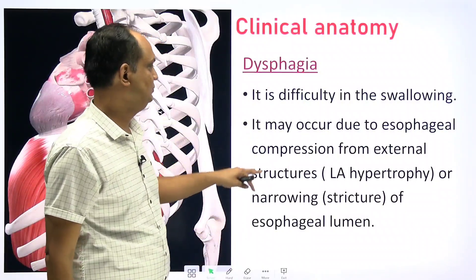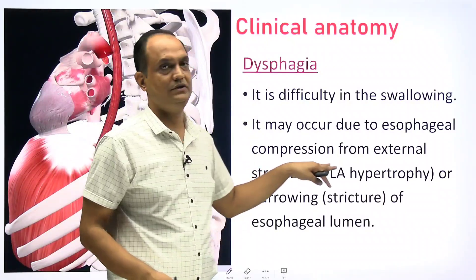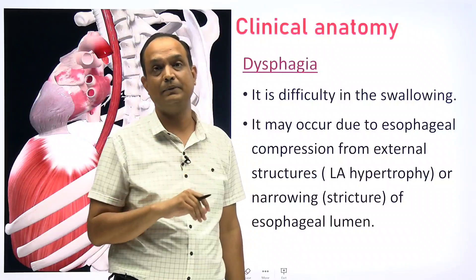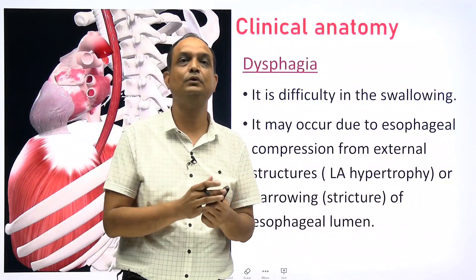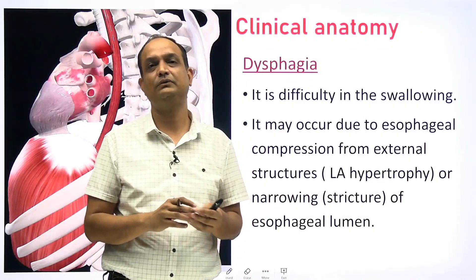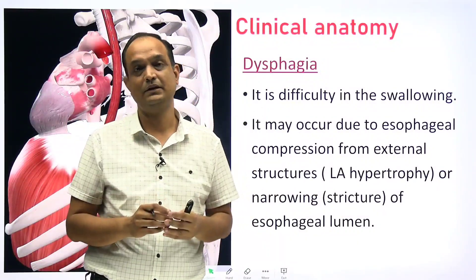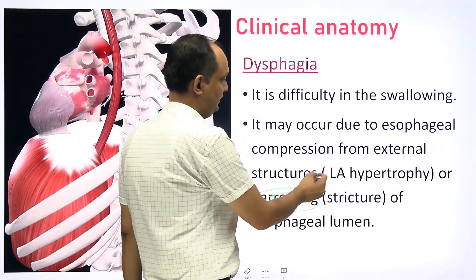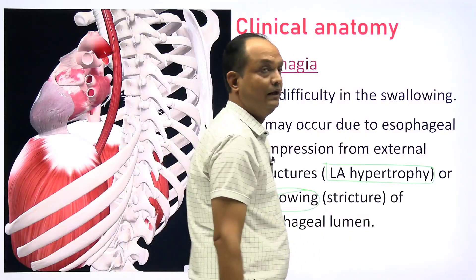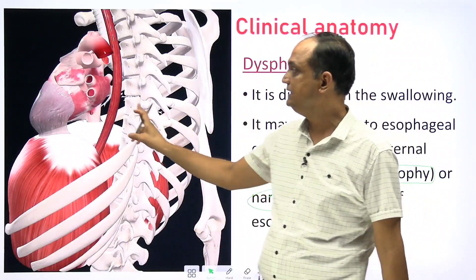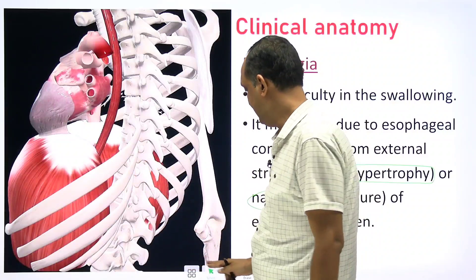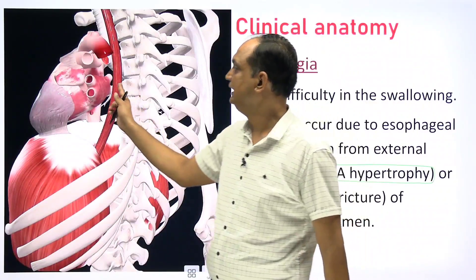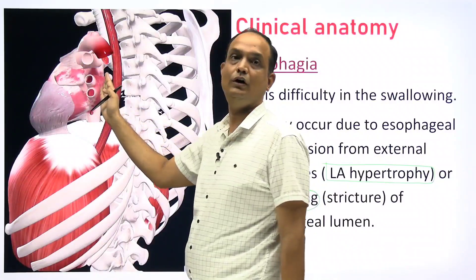One more topic is dysphagia, which means difficulty in swallowing. It may occur due to esophageal compression. The compression can be external, produced by mediastinal conditions such as enlargement of lymph nodes in the mediastinum, or there may be a stricture, narrowing, or left atrial hypertrophy. We saw in Part 1 that the thoracic part of the esophagus is anteriorly related to the posterior wall of the heart.